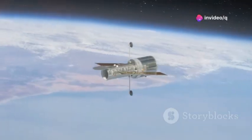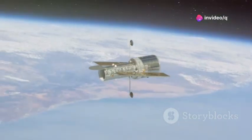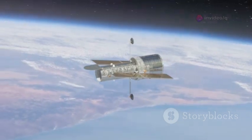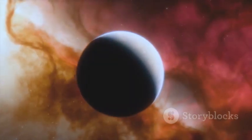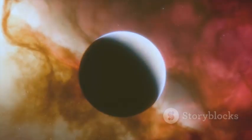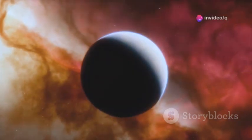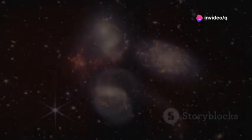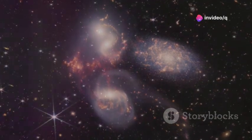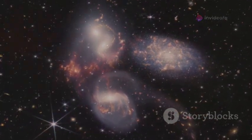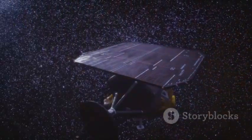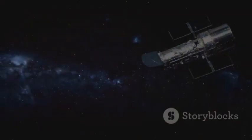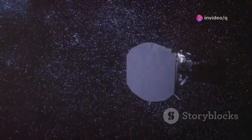While Hubble orbits close to Earth, JWST sits a million miles away at a stable point, free from Earth's interference. This lets JWST tackle questions Hubble couldn't, like seeing the very first galaxies and studying exoplanet atmospheres in detail. Hubble showed us the universe's expansion. JWST lets us witness its beginnings. Hubble walked so Webb could run, and now Webb is running into the unknown.